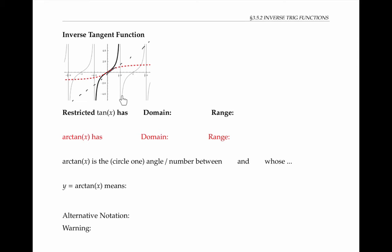Now you might ask: would it be possible to pick a different piece of the tangent function to invert? And the answer is yes. But on our planet, we use the convention that we pick this piece of tangent to invert,